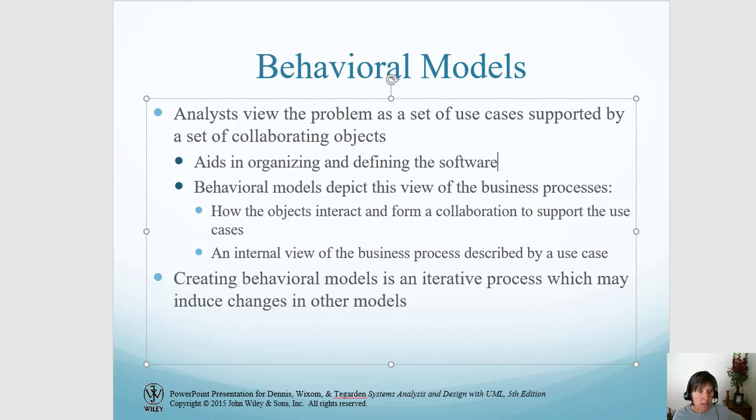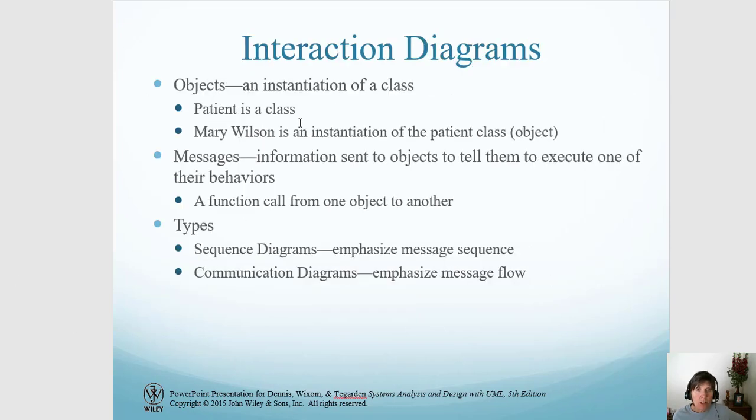Part of that is identifying the objects. An object is simply an instantiation of a class. So if we have a patient class that would be defined in the analysis class diagram, then an object, for example Mary Wilson, is a single instantiation of that class - a single patient object.